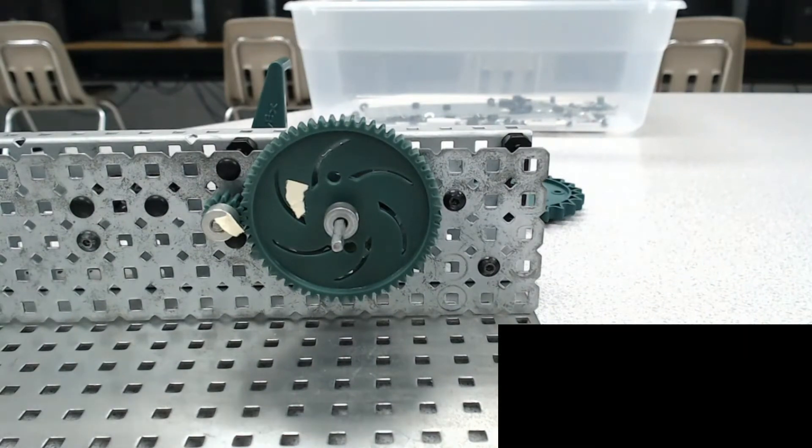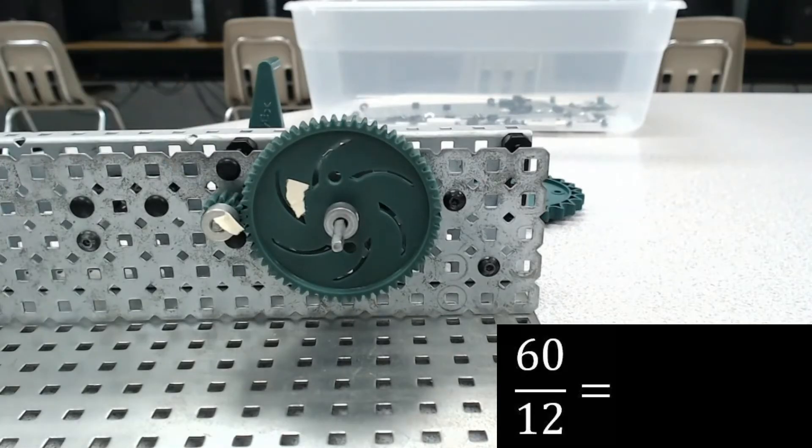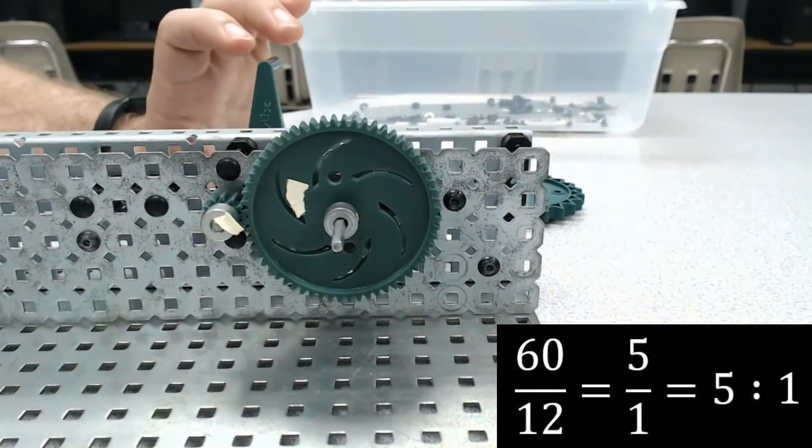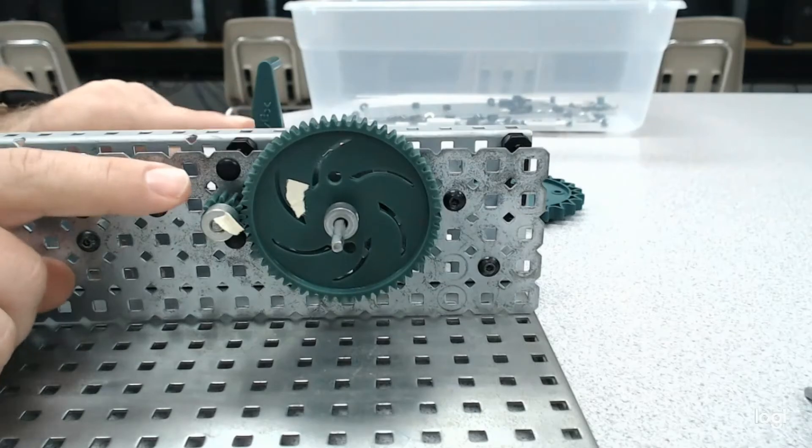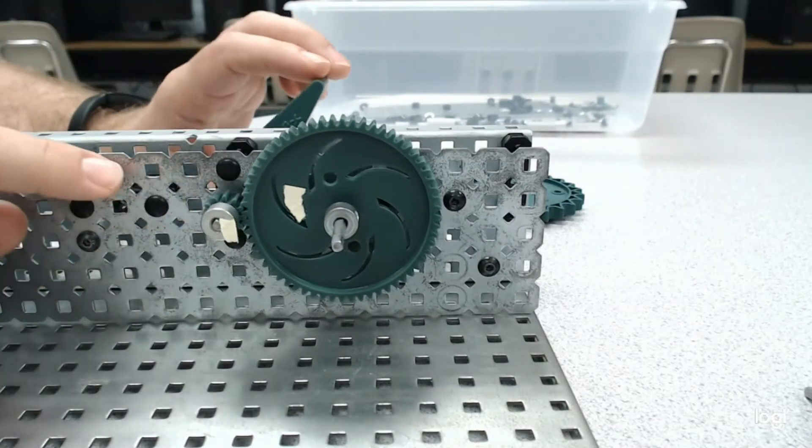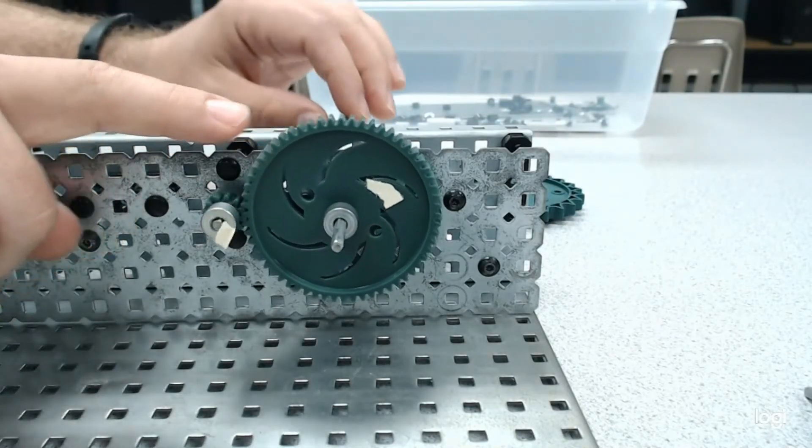Now we have 12 here and 60 here. This is my input. So 60 in our formula goes on top, 12 on the bottom. 60 divided by 12 equals 5 which means I have a 5 to 1 gear ratio.